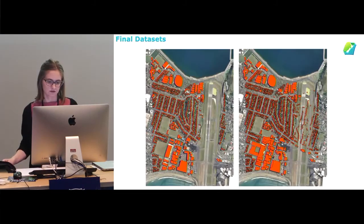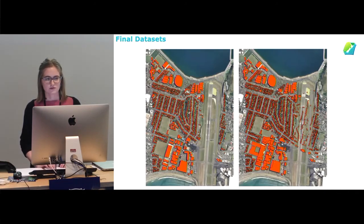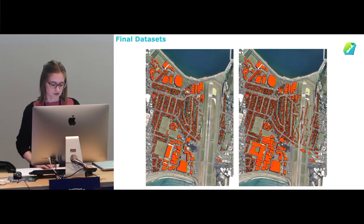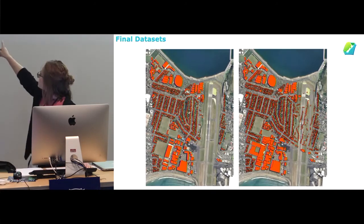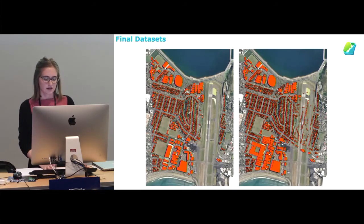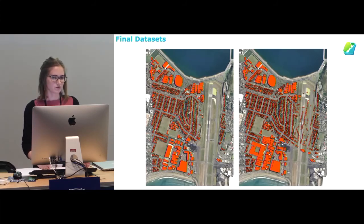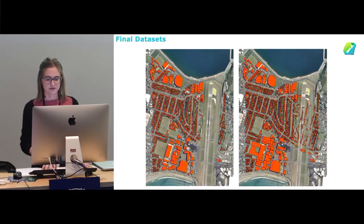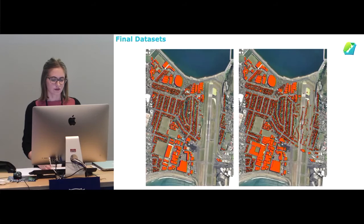When we release the data, there will be two datasets released on the LINZ data service under the same open license as the aerial imagery. The first contains all current building outlines — the ones relating to the most recent imagery — and their IDs. The second dataset contains a full history of New Zealand's building outlines from beginning to end of all processed data, allowing people to use buildings relating to older imagery and to build a picture of what building outlines looked like throughout history.